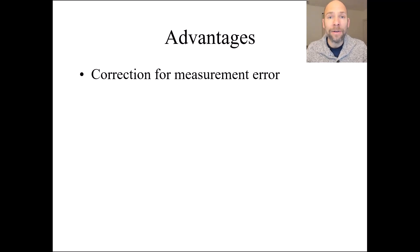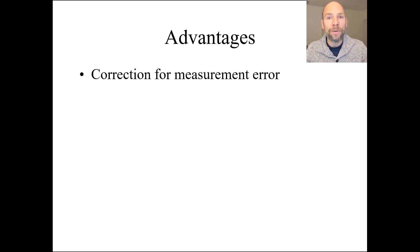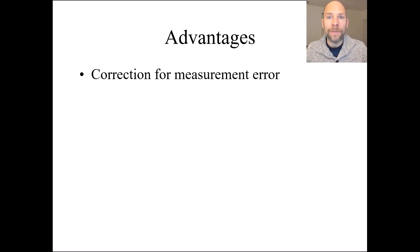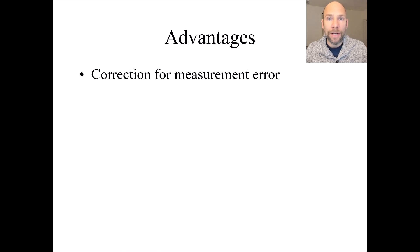Why is this important? The accuracy of our path coefficients, correlations, and their standard errors is affected by measurement error. When we look at correlations between observed variables that are not perfectly reliable and do contain measurement error, those correlations represent underestimates of the true score correlations. We know this from Spearman's correction for attenuation from classical test theory, which shows in a formula that we can correct our observed correlations for random measurement error if we know the reliabilities of the variables.